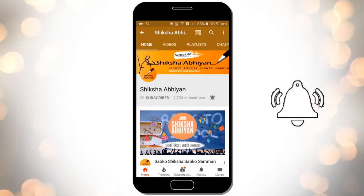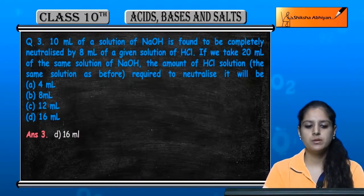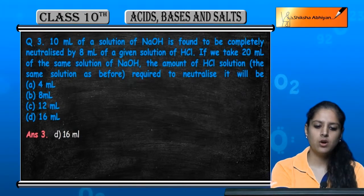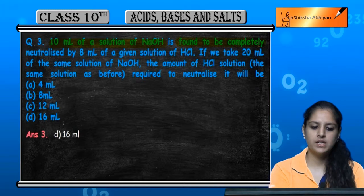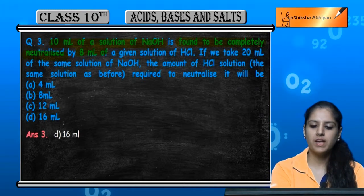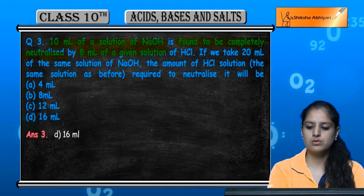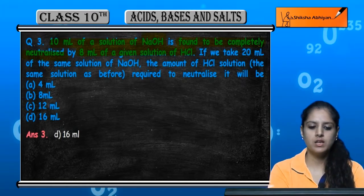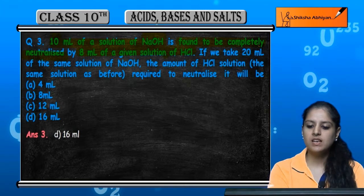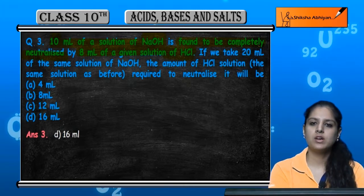Question number 3: 10 ml of a solution of NaOH is found to be completely neutralized by 8 ml of a given solution of HCl. We have a NaOH solution which is 10 ml, neutralized by 8 ml of HCl.